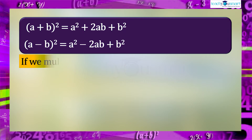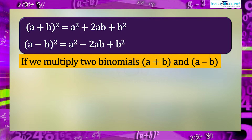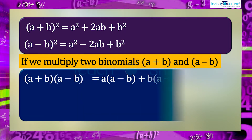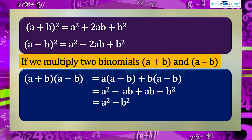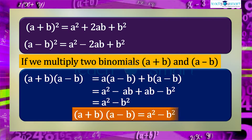If we multiply two binomials (a+b) and (a-b), we get (a+b)(a-b) = a(a-b) + b(a-b) = a²-ab+ab-b² = a²-b². That is, (a+b)(a-b) = a²-b².